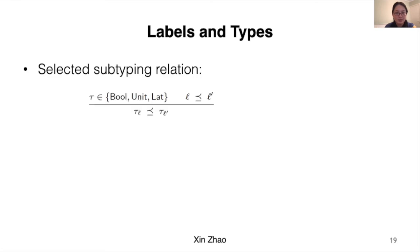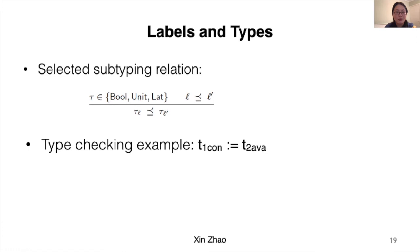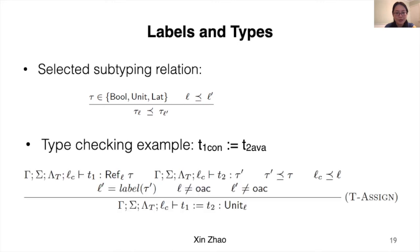Here is a selected subtyping relation where labeled types are covariant in their labels. Looking at the type-checking example where we assign an available term t2 to a consistent reference t1: in our T-Assign rule, after type-checking t1 and t2, the restriction ensures that the type of t2 is a subtype of the reference body type of t1. Because the label available is higher than label consistent, this assignment cannot be type-checked since the subtyping restriction cannot be preserved.